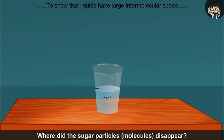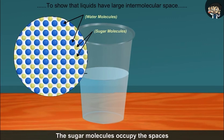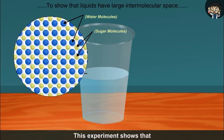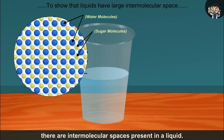Where did the sugar particles or molecules disappear? The sugar molecules occupy the spaces between the molecules of water. This experiment shows that there are intermolecular spaces present in a liquid.